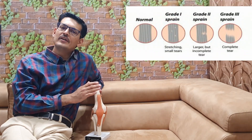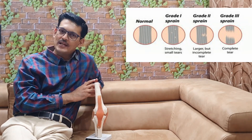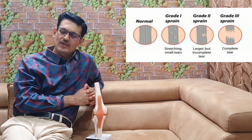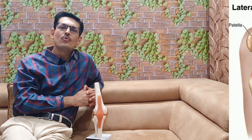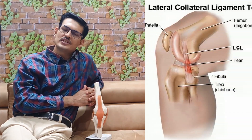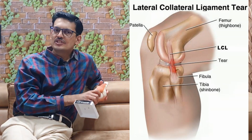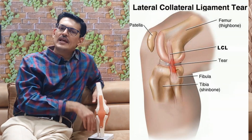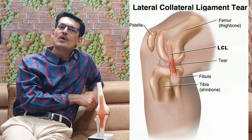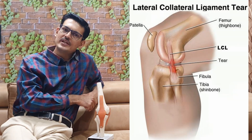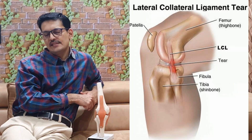Grade 1 and some Grade 2 injuries can be treated with immobilization in extension, whereas all Grade 3 and some Grade 2 injuries require surgical intervention. Varus instability at 30 degrees indicates a torn LCL, while varus opening at both 0 and 30 degrees suggests a combined ACL and LCL injury.